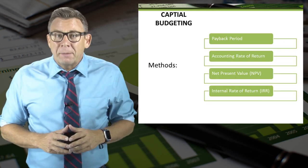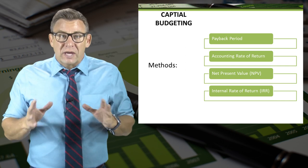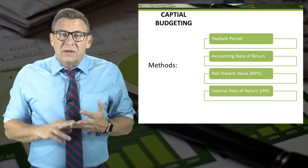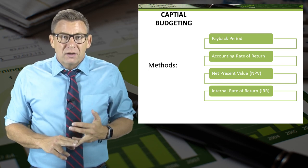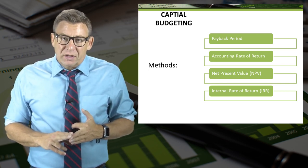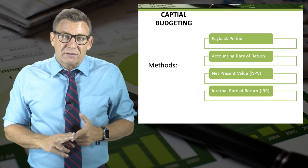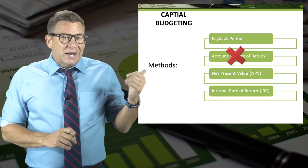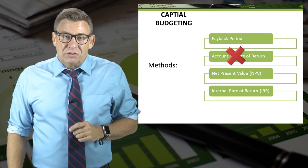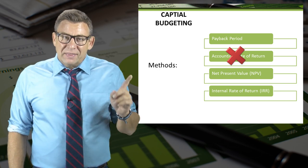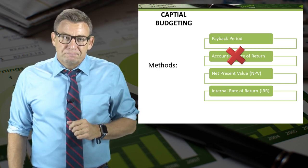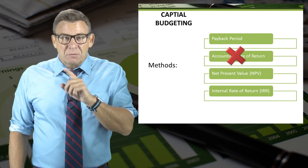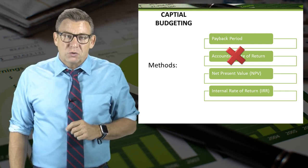There are four primary methods used for capital budgeting techniques. They are the payback period method, the accounting rate of return method, the net present value method, and the internal rate of return method. Although I don't know any company doing the accounting rate of return — I think that might be really old school — there are videos on the other methods which I strongly encourage you to watch.